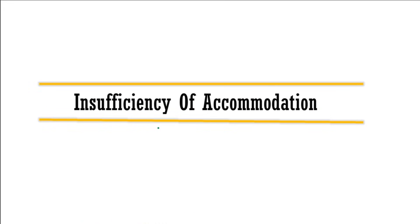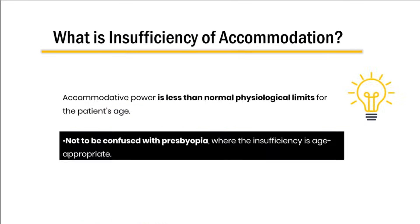First of all let's talk about the insufficiency of accommodation. The accommodative power here is less than the normal physiological limits for that patient's age. This should not be confused with presbyopia, where the insufficiency is age-appropriate.